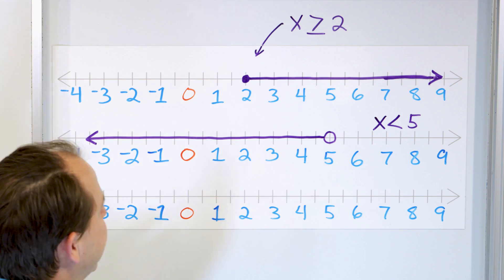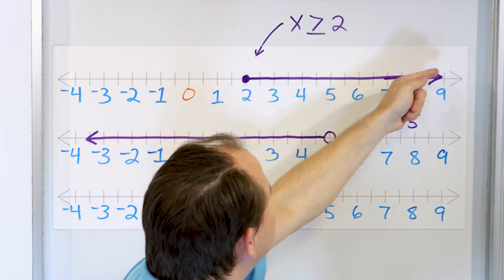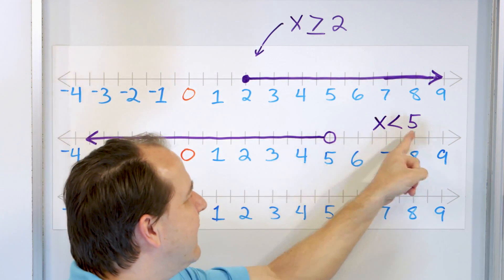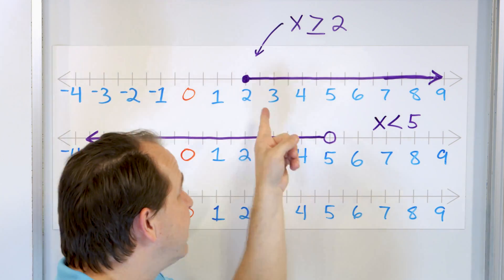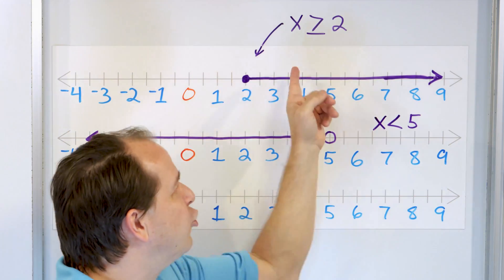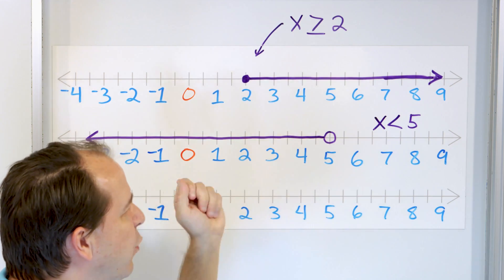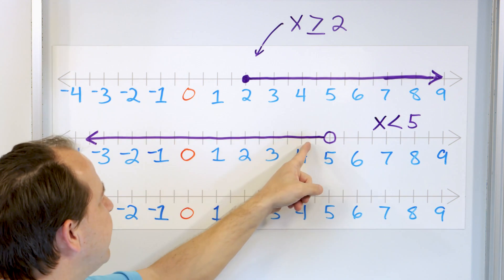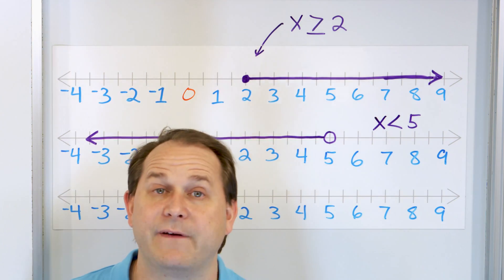A couple of things to understand: when the arrow points to the right, x is greater than something, and the shaded region goes to the right. When the arrow points to the left, it's all values less than the number. And if you have an underline underneath, you make the dot solid because that number is included in the possible values of x. When there's no line underneath, it's not equal to five — so four, three, two, one, even 4.5 and 4.7 are okay. Just the exact number five is not included.